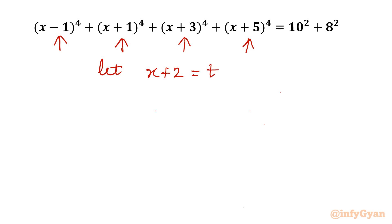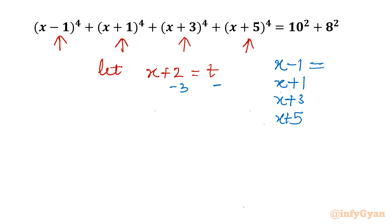Now I will calculate the four brackets — x−1, x+1, x+3, x+5 — in terms of t. So x−1 becomes t−3, x+1 becomes t−1, x+3 becomes t+1, and x+5 becomes t+3.